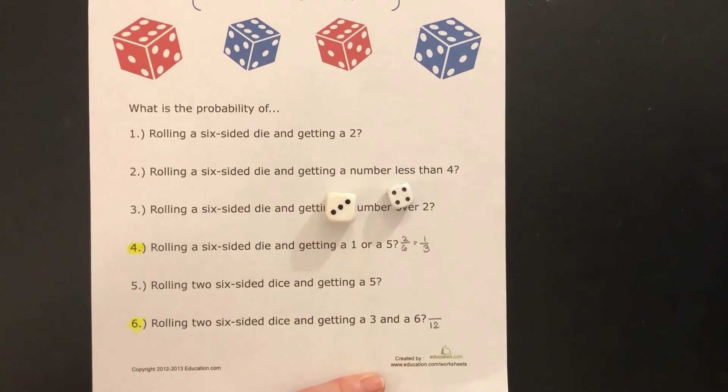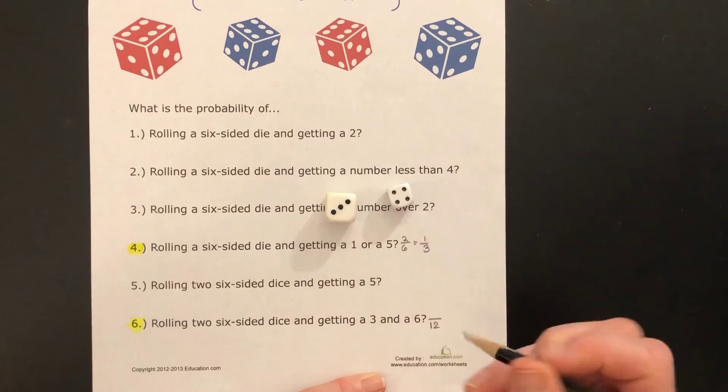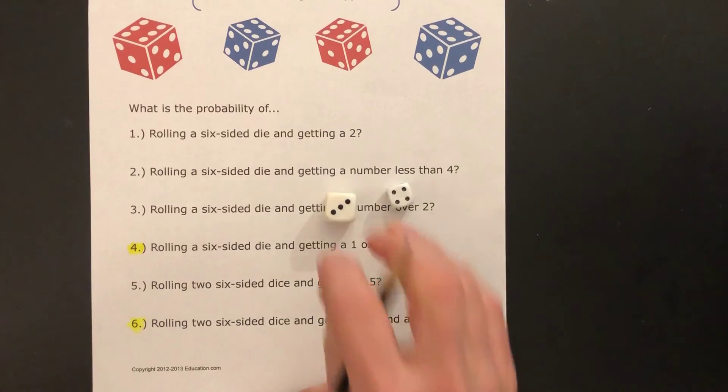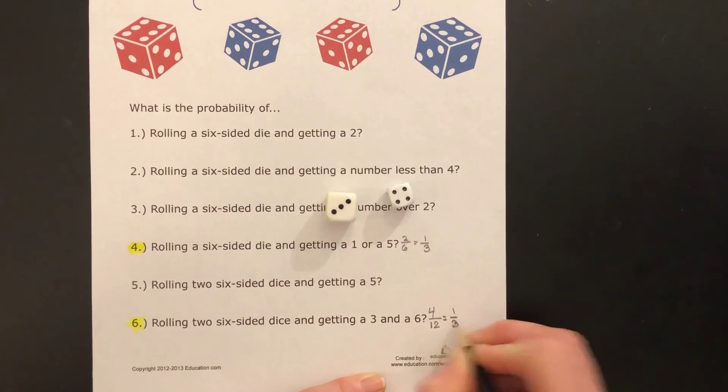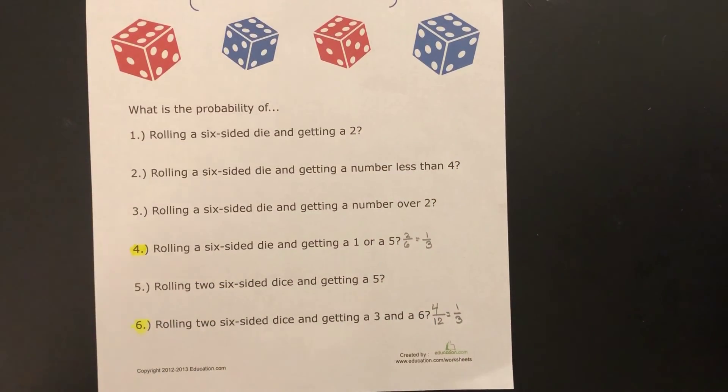Because all together you've got twelve sides. This one has a three and a six, and this one has a three and a six, so that's one, two, three, four. So there's four out of twelve chances of getting three or a six with two dice. That reduces to one-third. Now let's make sure we write the probability correctly.